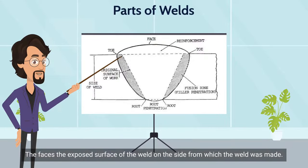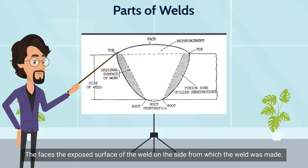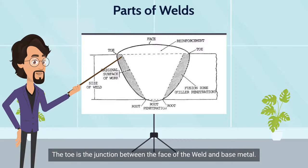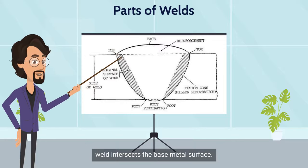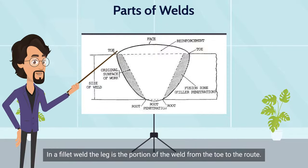The face is the exposed surface of the weld on the side from which the weld was made. The toe is the junction between the face of the weld and the base metal. The root of a weld includes the points at which the back of the weld intersects the base metal surface. In a fillet weld, the leg is the portion of the weld from the toe to the root.